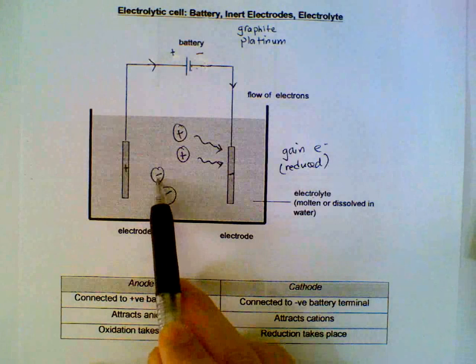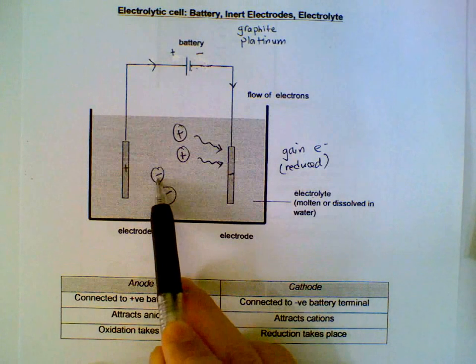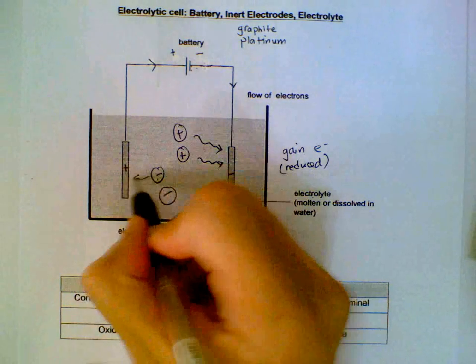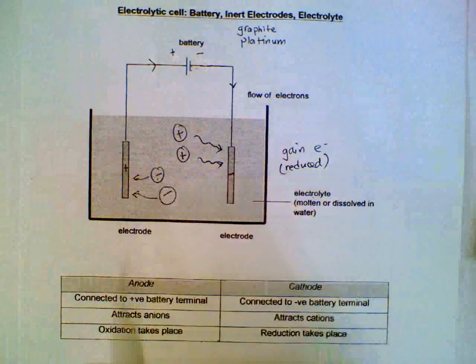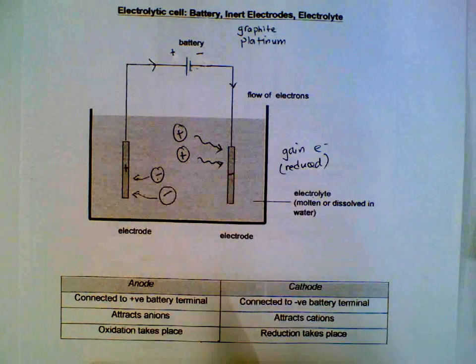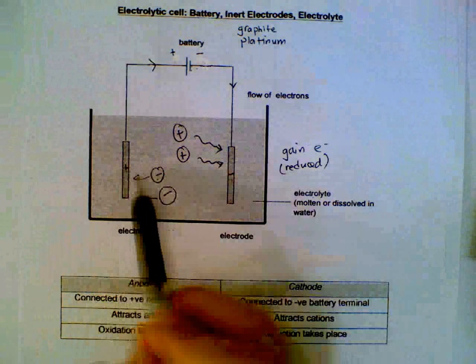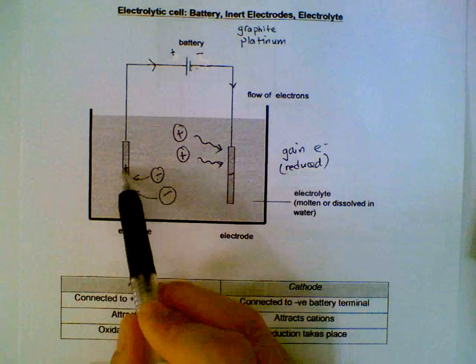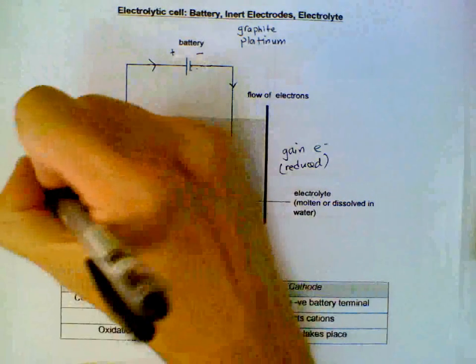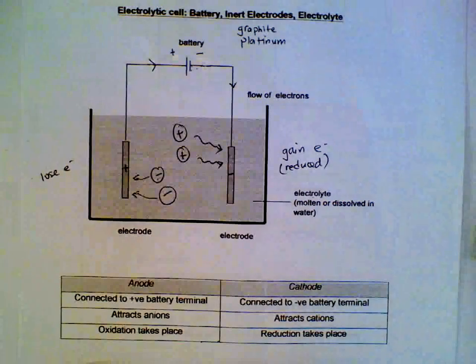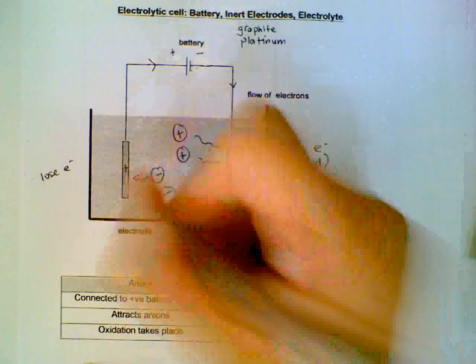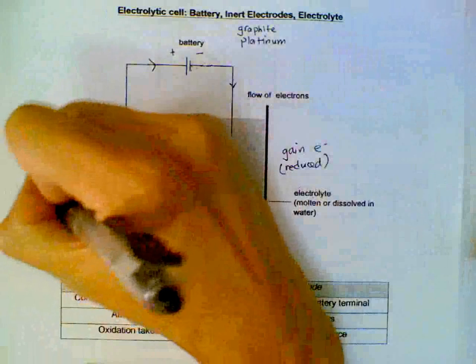The negative ions, the anions, will be moving towards the positive terminal, or rather the positive electrode. And they will deposit their electrons. They will lose their electrons. In other words, in terms of redox reactions, they will be oxidized.